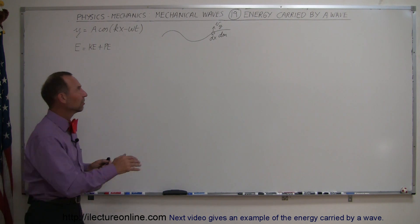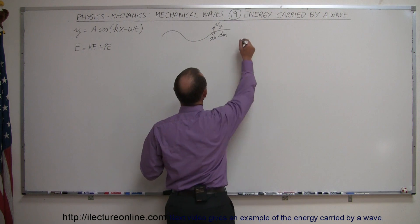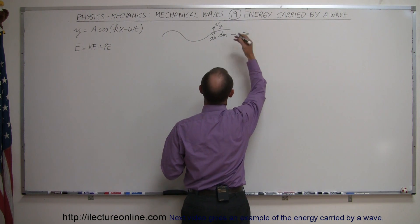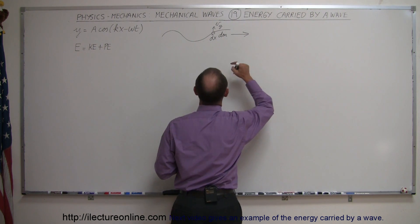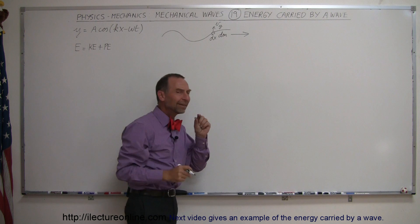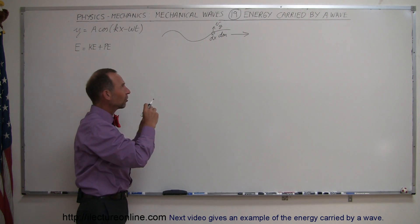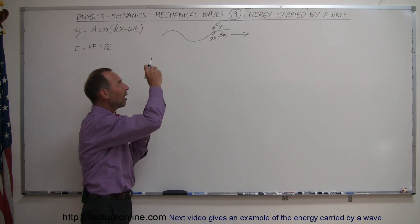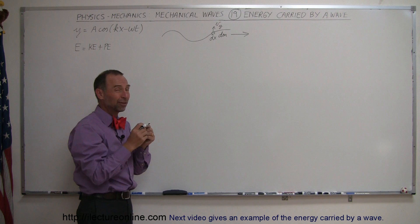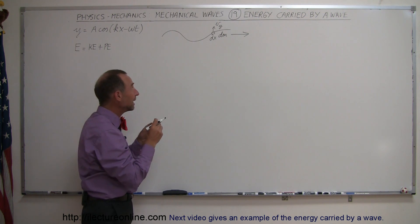The way we want to look at it is: here we have a wave, and the wave energy travels to the right, for example. Let's take a small little piece on the string, and as that piece on the string moves up and down, it experiences two kinds of energies.